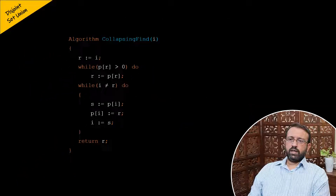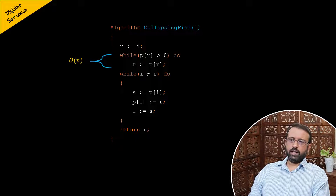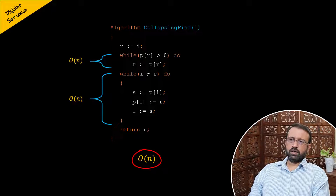Now let us look at the time complexity of the collapsing find algorithm. The first statement is a primitive statement and takes constant time. We have two while loops — the first will execute for at most n times, and the second may also execute for at most n times. The return statement is a primitive statement that takes constant time. Therefore, the time complexity of the collapsing find algorithm is O(n).